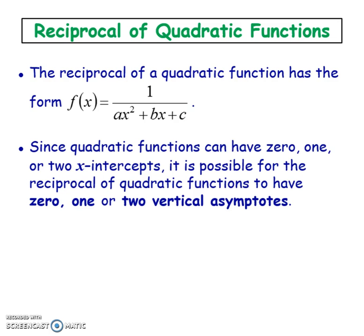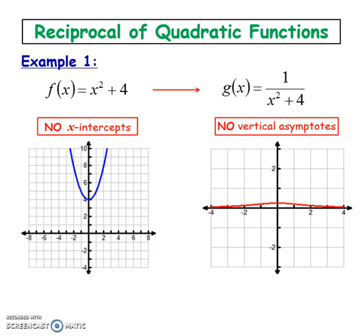You would think that for quadratics, you would always have 2 vertical asymptotes, but that's actually not the case. You can have 0, 1, or 2 vertical asymptotes, and I'm going to show you an example of every single one of those. Let's start off with the 0 vertical asymptotes.